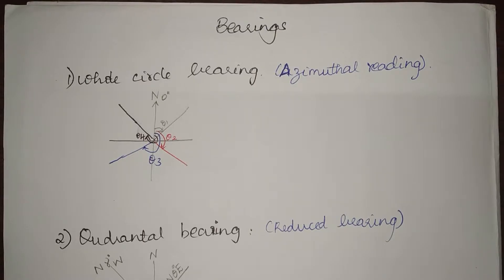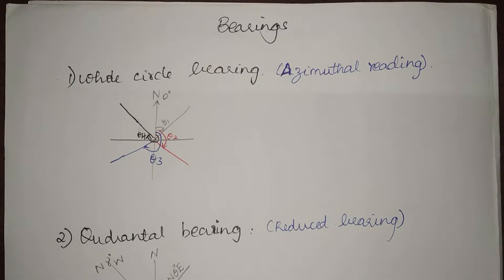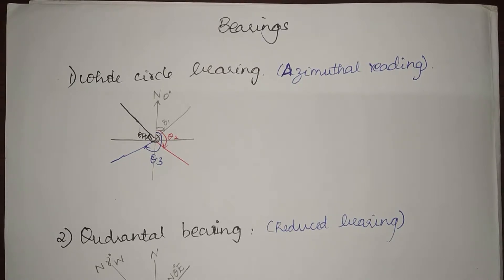Hi, welcome to Tips and Tricks. Today we are going to see about bearings. There are two types of bearings available: one is whole circle bearing and the other one is quadrantal bearing.